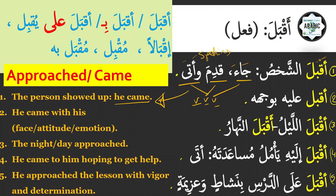أقبل عليه بوجهه — he came with his face or attitude, he came to him with an attitude. It could be a positive one. We used this in a previous video: بوجهه بشوش — بشوش means cheerful. أقبل الليل — the night approached or is approaching. أتى again means he came. أقبل إليه يأمل مساعدته means he came to him hoping to get help.